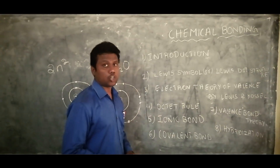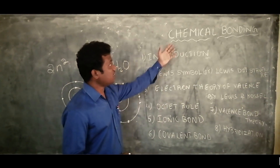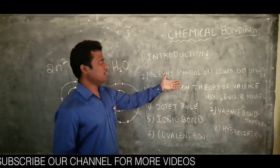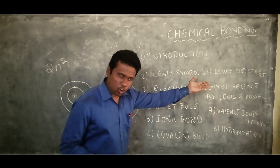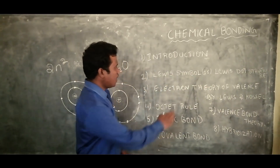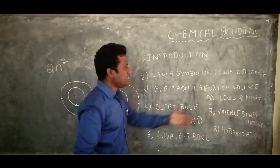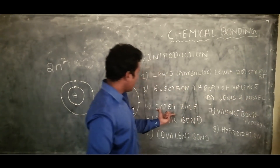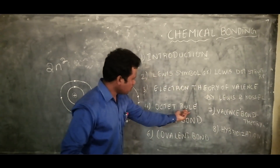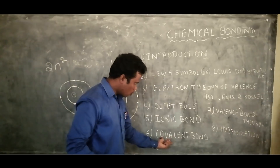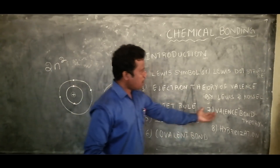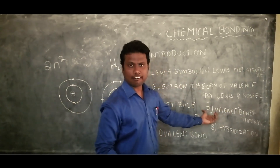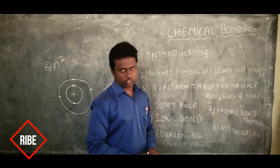The topics we are covering in this chapter are: introduction, Lewis symbol or Lewis dot structure, electron theory of valence by Lewis and Kossel, octet rule, ionic bond, covalent bond, valence bond theory, VSEPR theory, and hybridization.